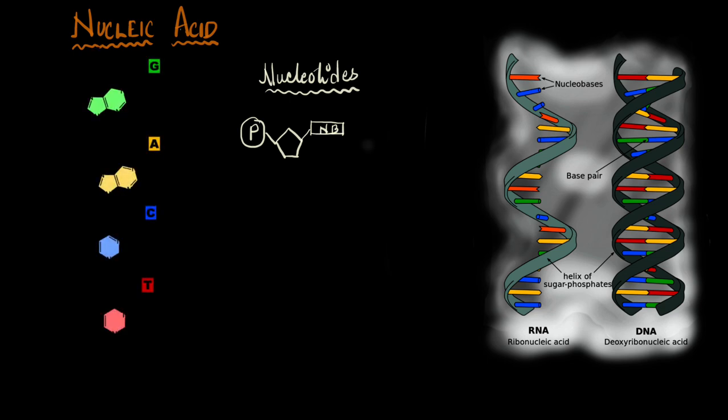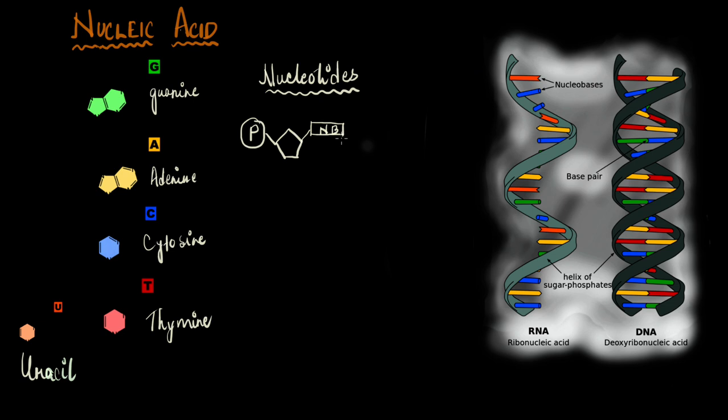We have guanine, adenine, cytosine, and thymine. So, these four nitrogenous bases are seen in a DNA. But when it comes to RNA, instead of thymine, we get to see another nitrogenous base, which is called uracil.